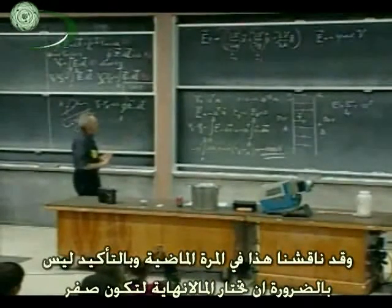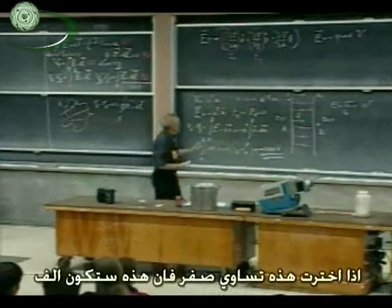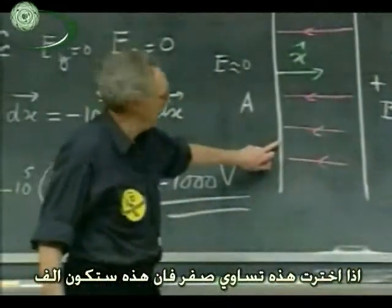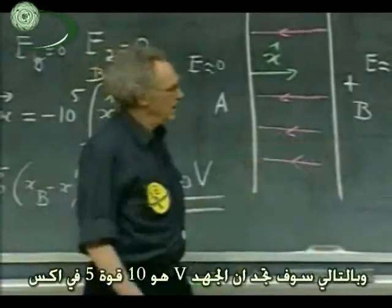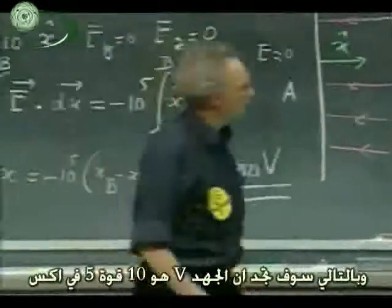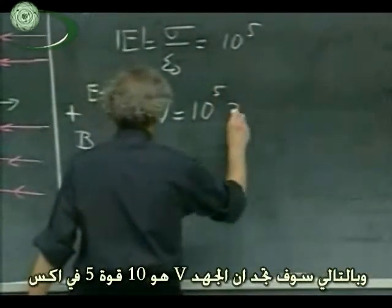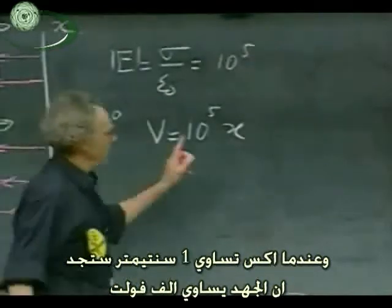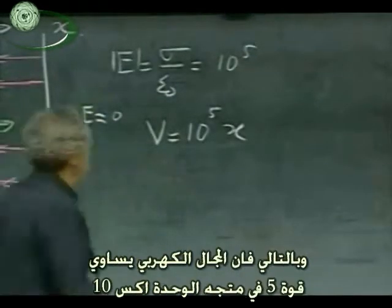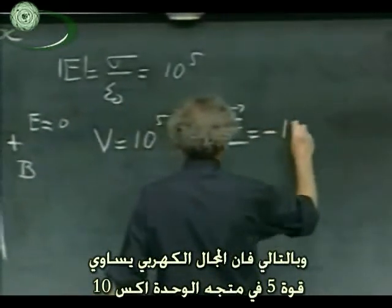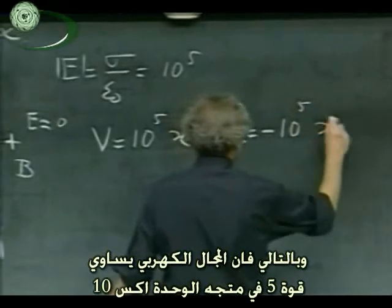You don't always have to choose infinitely far away as zero. So I could choose this plate arbitrarily to be zero potential — this would then be plus one thousand. And so you find that the potential V is then simply 10^5 times X. When X is zero, you find the potential to be zero, and when X is one centimeter, you find the potential to be one thousand volts. That goes together with the electric field equals minus 10^5 in this direction.